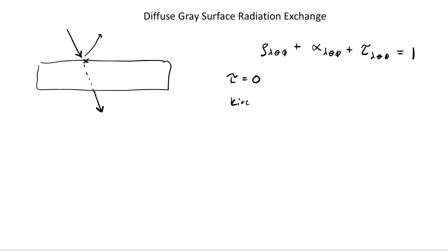The other thing to point out is Kirchhoff's law. Kirchhoff's law for radiation says that α at a given wavelength and direction is always equal to emissivity ε at that same wavelength and direction. Once you move away from specifying wavelength and direction, those things no longer have to be equal. For example, a solar panel absorbs a lot of radiation in the solar spectrum at T = 5,800 K, so absorptivity in the solar spectrum might be really high, but the properties in the thermal spectrum may differ. So α is no longer equal to ε in the regions we care about.